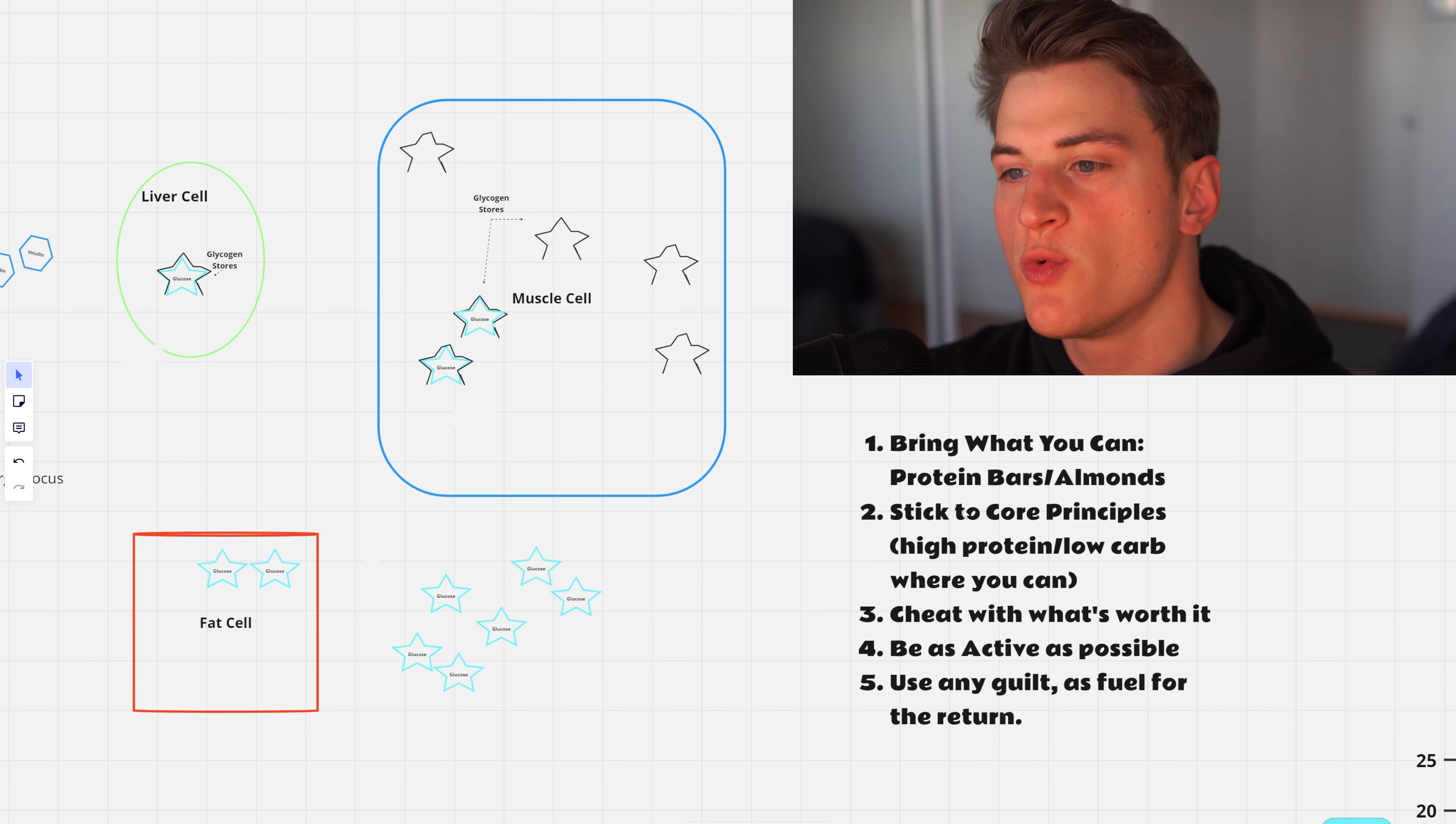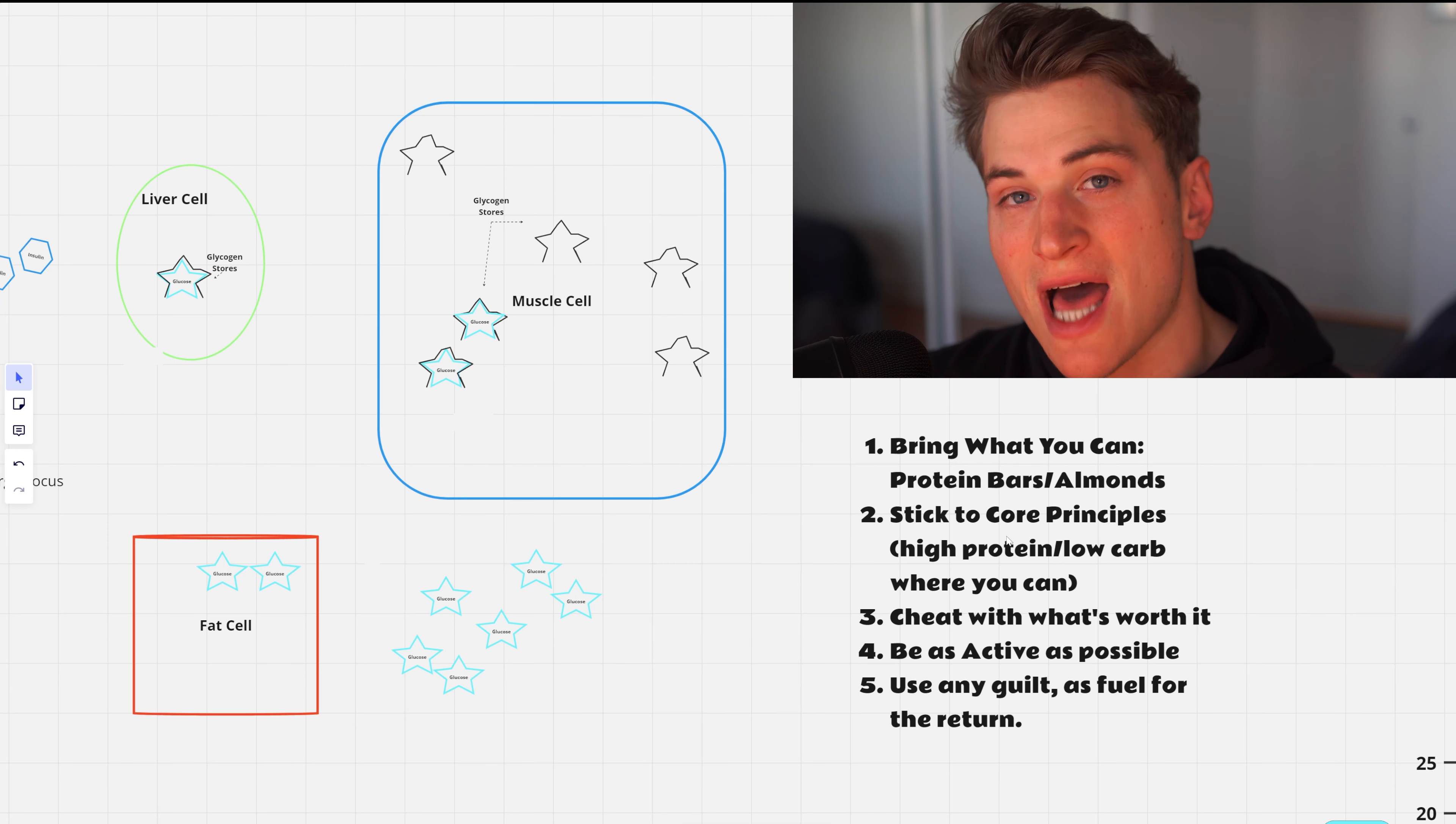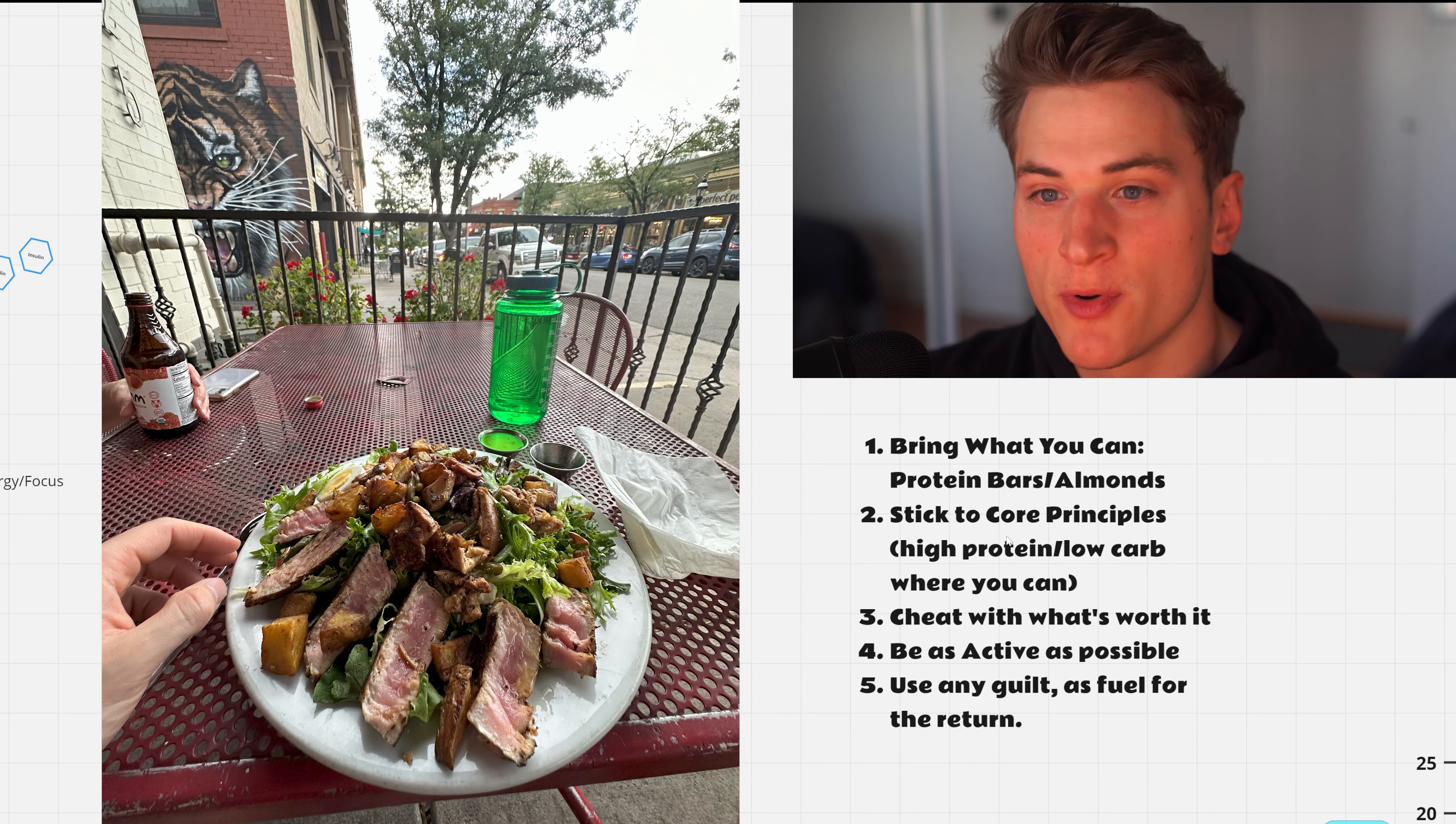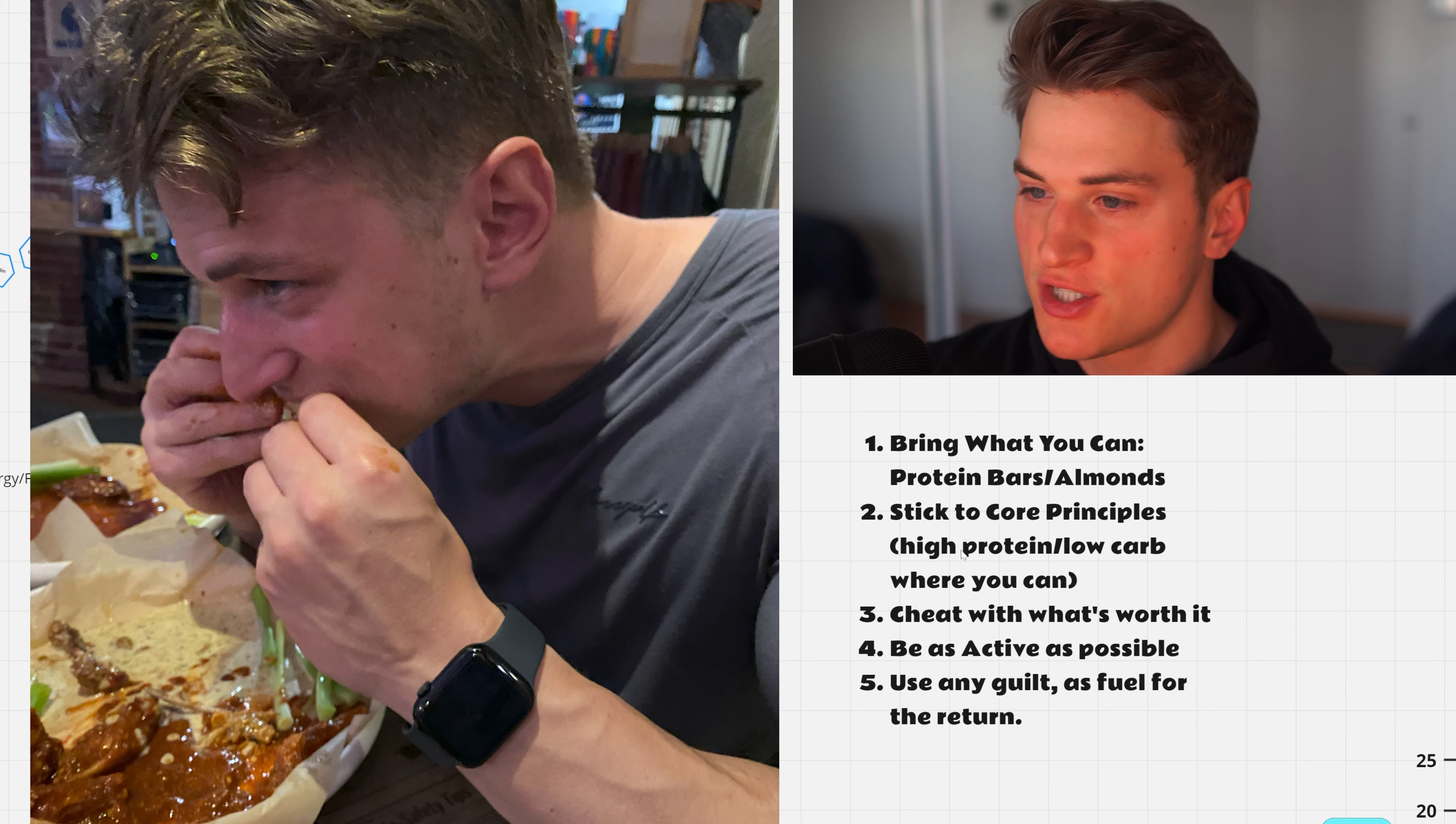Next, you're going to stick to your core principles. Once you're at your destination, when you go out to eat or you have any sort of options, choose the high protein low carb option. You don't have to track food if you don't want to, you don't have to be super diligent in the components of what you eat. Get the meat - the steak, the chicken, the fish - and it should be the main source of your calories.